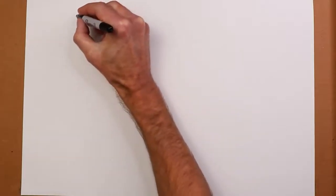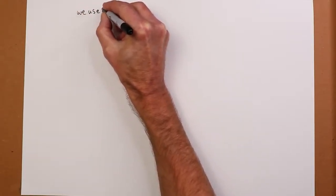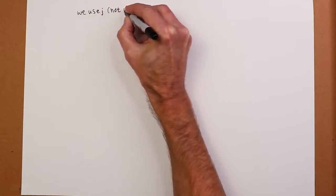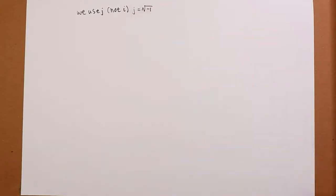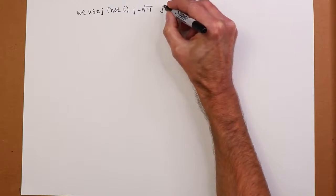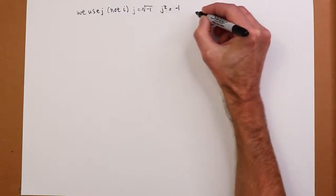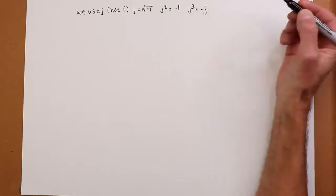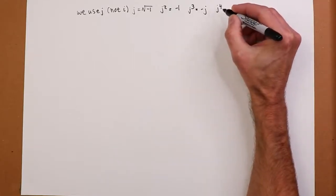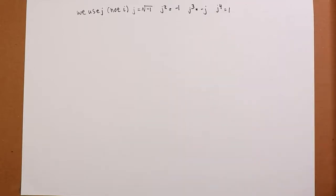In a math class, you would probably see this written out with the letter I. We don't use that for obvious reasons - we use I for current. So we use J. J is equal to the square root of minus one. We can go further with this and say that J squared would have to be minus one, J cubed would have to be minus J, and J to the fourth would have to equal one.